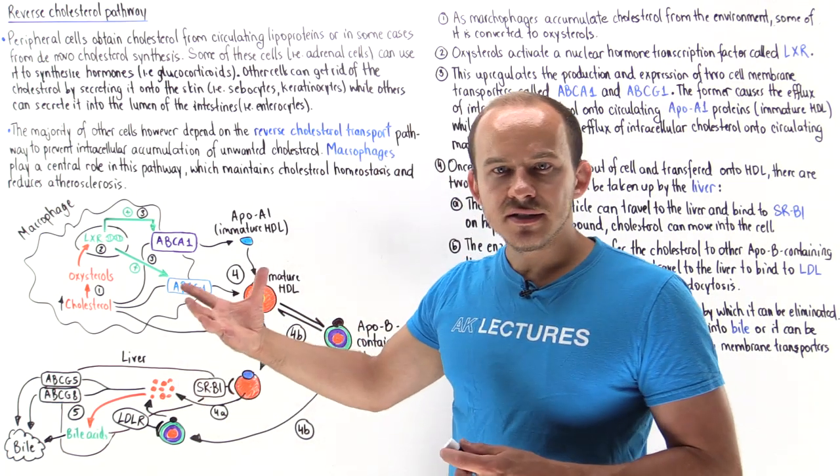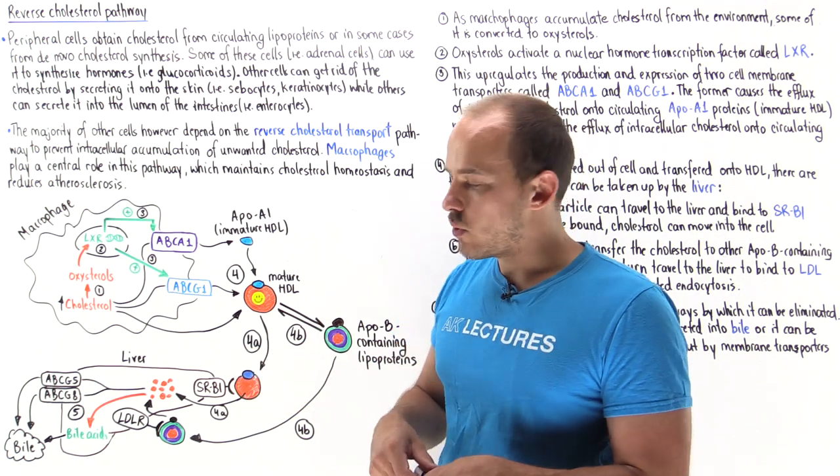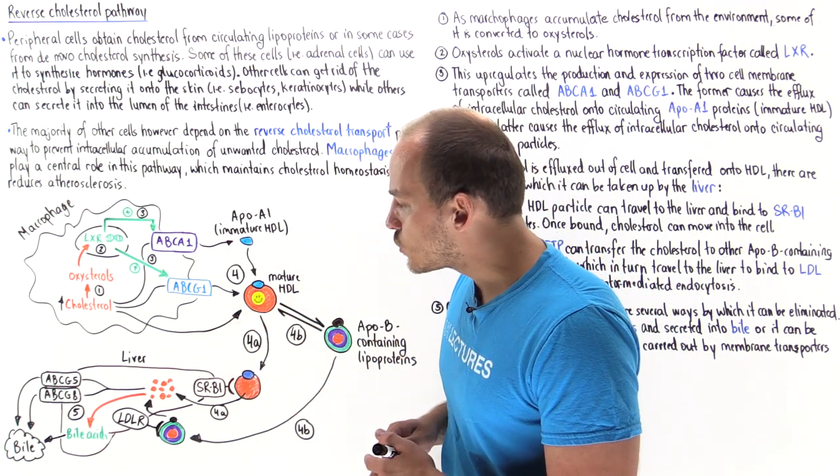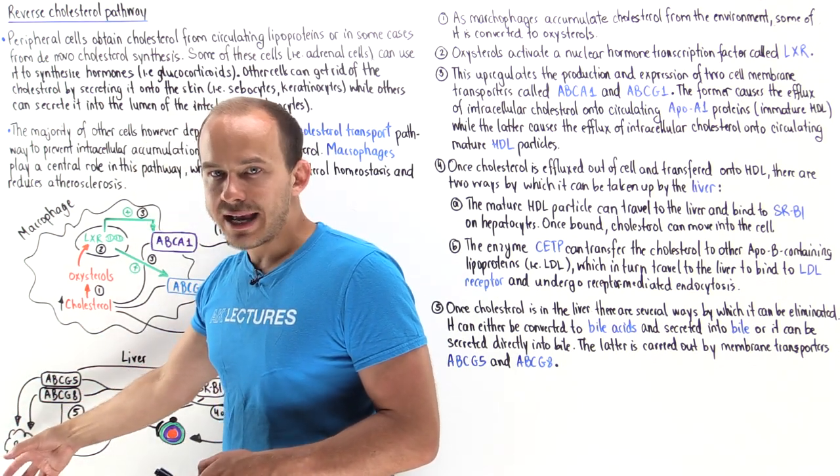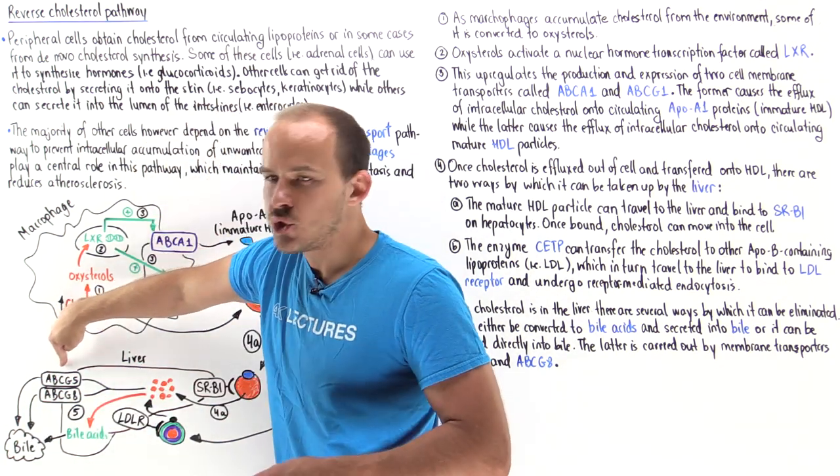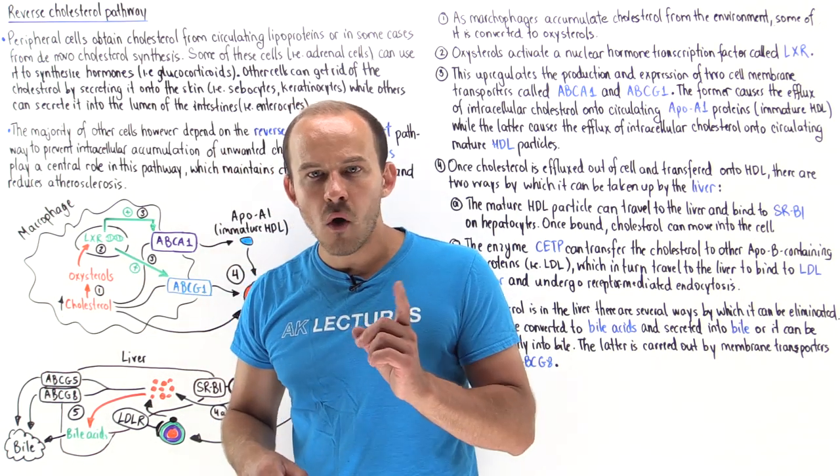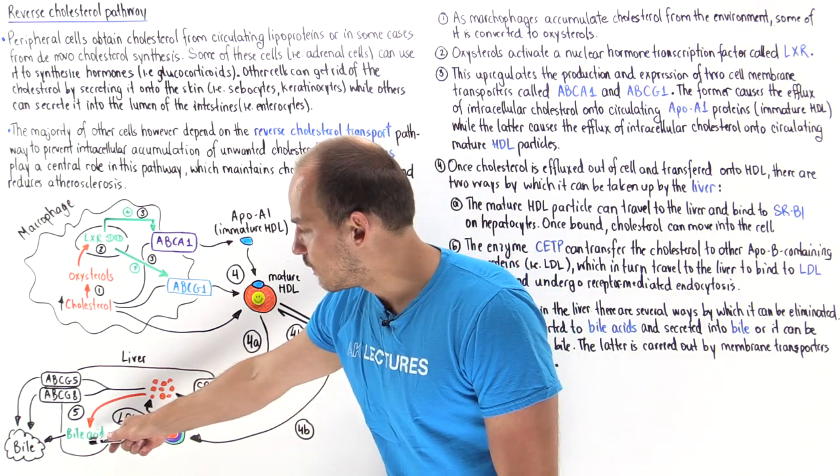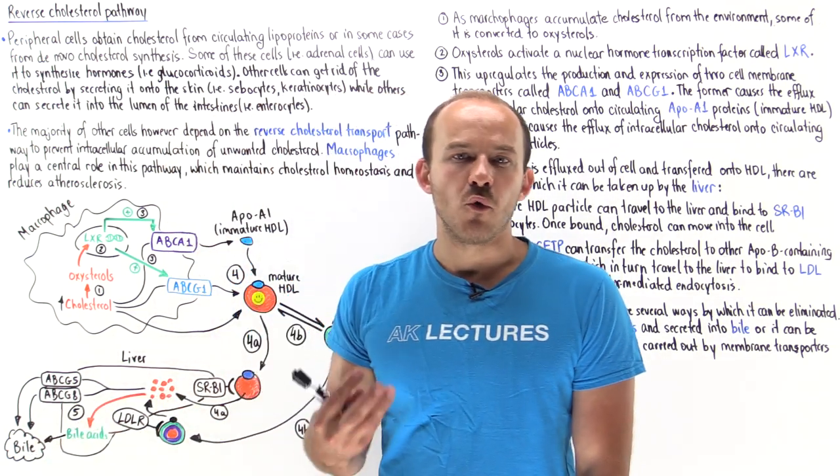Once inside the hepatocytes, the cholesterol can follow one of two pathways. Either the cholesterol exits the cells of the liver and is dumped directly into bile via the help of these two transporters, ABCG5 and ABCG8, or the cholesterol can be converted into bile acids, and then bile acids are used to help form bile.